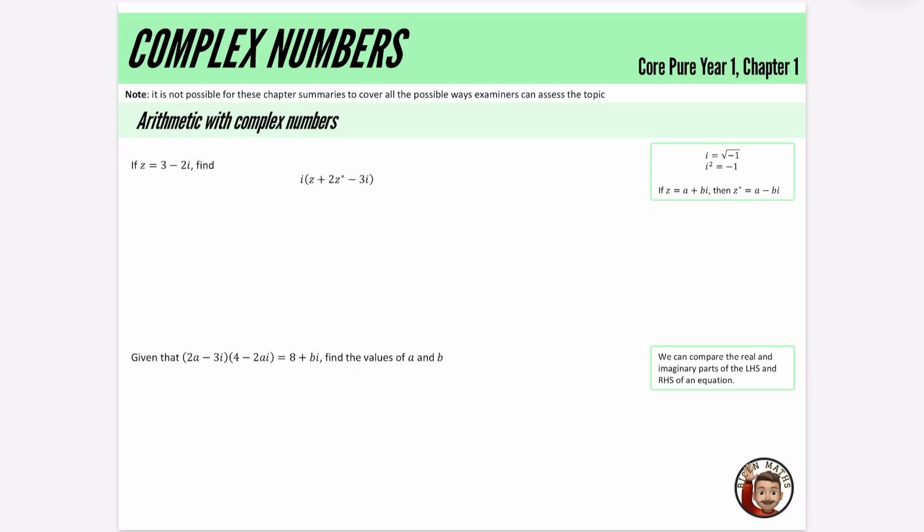Okay, I am getting around to doing the Further Maths chapter summaries, and this is the first one from Core Pure Year One, Chapter One, and it's complex numbers. I've written this note here, it's going to be for all of them for Further Maths, it is not possible for these chapter summaries to cover all the possible ways that examiners can assess the topic.